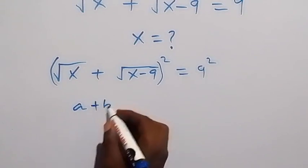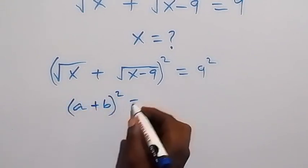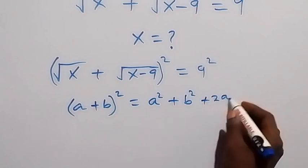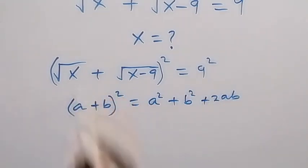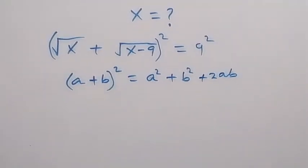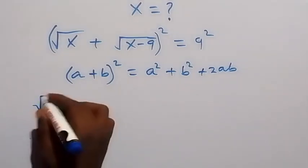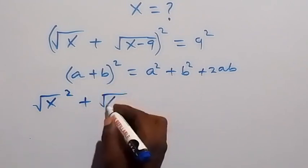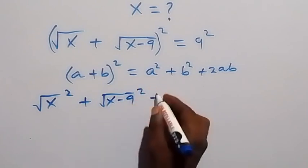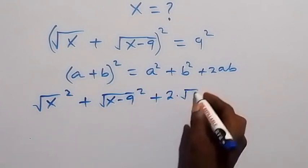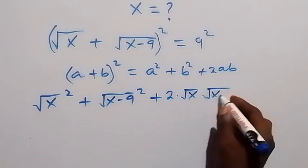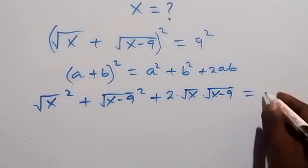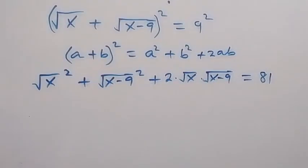When we have a plus b squared, this is the same as a squared plus b squared plus 2ab. Expanding this, with a standing as root x and b standing as root x minus 9, this becomes root x squared plus root x minus 9 squared, plus 2 times root x times root x minus 9, equals 9 squared, which we can write as 81.